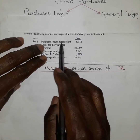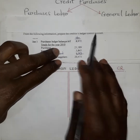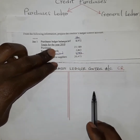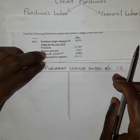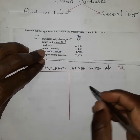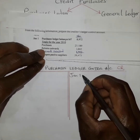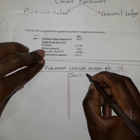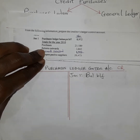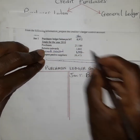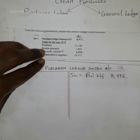We have purchases ledger balances brought forward. When balances are brought forward, they are treated as an increase. Since this is a liability account and liabilities increase on the credit side, we are going to credit that balance. So on January 1st, we record the balance brought forward from the previous period of 8,972.